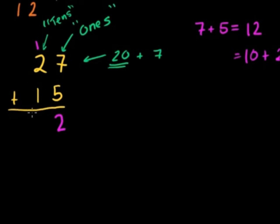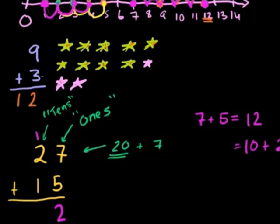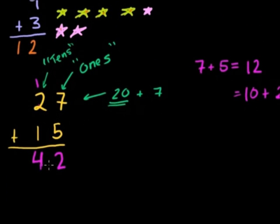Then you do the exact same thing in the tens place: add the 1 plus the 2 plus the 1. On the number line: start at 1, add 2 — go up 1, 2 — you end up at 3. Then add another 1, so you end up at 4. So you end up at 42. We didn't have to draw a number line all the way to 42 or draw 42 objects. Just by knowing 7 plus 5 and 1 plus 2 plus 1, we figured out that 27 plus 15 is 42.